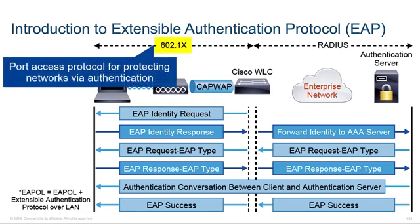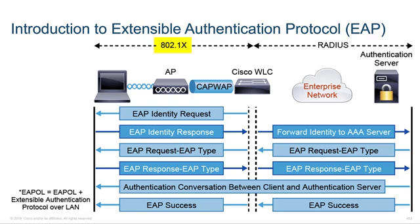802.1X is a port access protocol for protecting networks via authentication. This type of authentication is extremely useful in the Wi-Fi environment. If a Wi-Fi user is authenticated via 802.1X for network access, a virtual port is going to be opened on the access point allowing communication. If it's not successfully authorized, a virtual port isn't going to be made available and communications are going to be blocked.